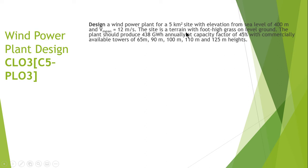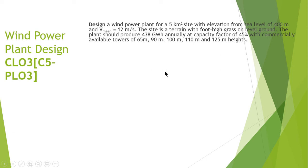The site is a terrain with foot-high grass on level ground, so we will use the table that has different values of alpha for different sites. The plant should produce 438 gigawatt hours annually at a capacity factor of 45 percent. With commercially available towers, we have to choose from 65 meter, 90 meter, 100 meter, 110 meter, and 125 meter towers.